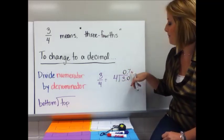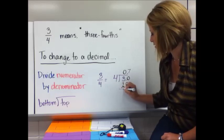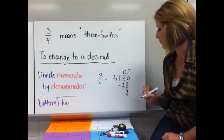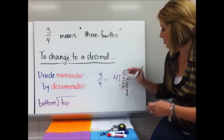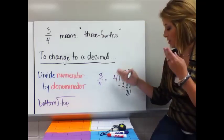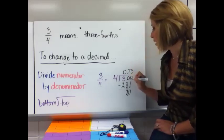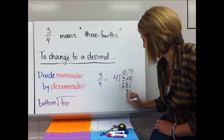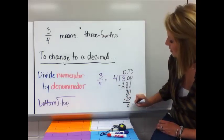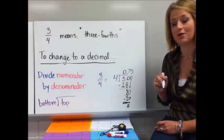Dad divides. Mom is going to multiply seven times four, which is 28. Then sister is going to subtract, which gives me two. Then I bring down another zero. Brother brings down. Dad divides again — four goes into 20 five times. Mom multiplies: five times four is 20. Sister subtracts, and I have a remainder of zero. You might draw a smiley face or a double line to show that you're done.